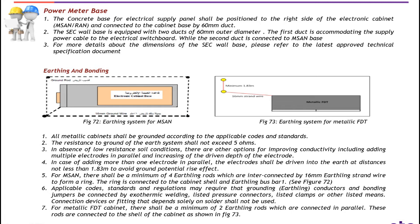Power meter base — there are a number of checkpoints. Number one: the concrete base for electrical supply panels shall be positioned to the right side of the electronic cabinet — we call it MSAN or RAN — and connected to the cabinet base by a 60 mm duct. The Skiko valve base is equipped with two ducts of 60 mm outer diameter. The first duct accommodates the supply power cable to the electrical switchboard, while the second duct is connected to the MSAN base. For more details about dimensions of Skiko valve base, refer to the latest technical specification document.